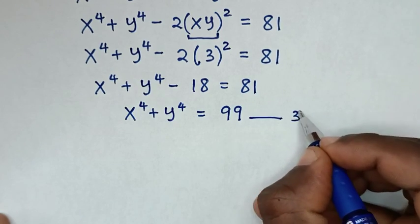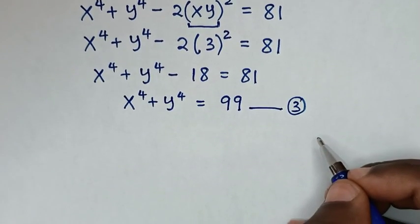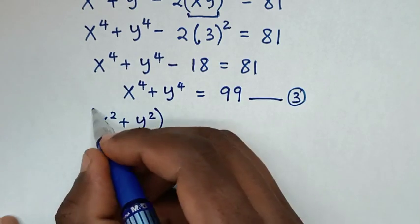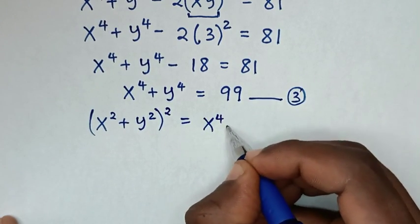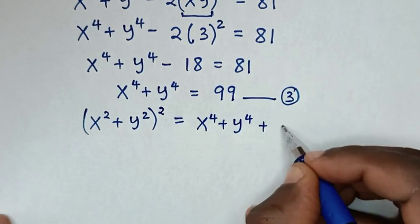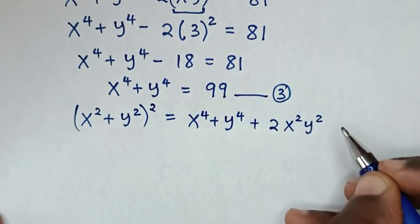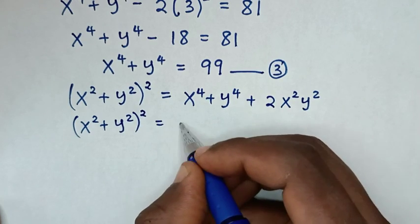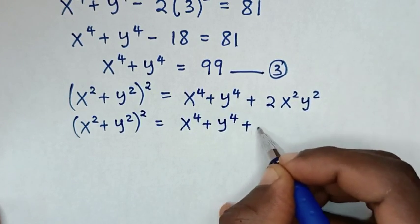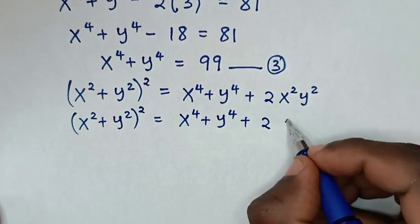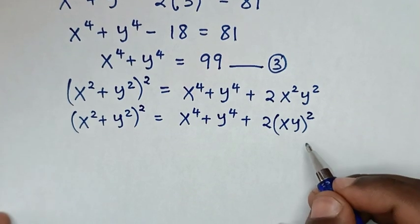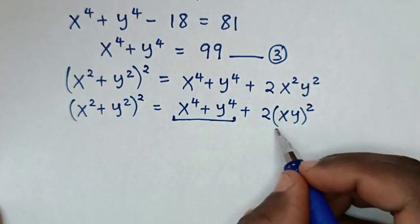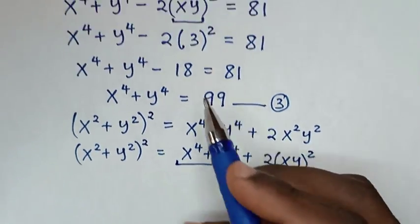Then we take negative 18 to the right side, so it will be x to the power 4 plus y to the power 4 is equal to 81 plus 18, which is 99. We let this as equation 3. Then in the next step, we apply the rule that (x squared plus y squared) squared is equal to x to the power 4 plus y to the power 4 plus 2 x squared y squared, which is (xy) squared.